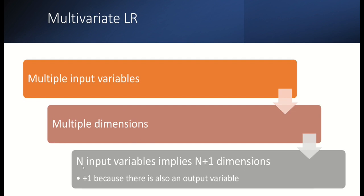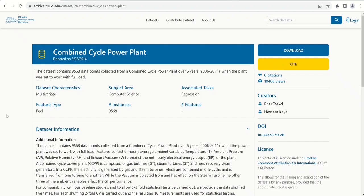Similarly, there is multivariate linear regression wherein we have multiple input variables and multiple dimensions. For example, if there are N input variables, then we'll have N plus one dimensions, where the plus one accounts for the output variable.